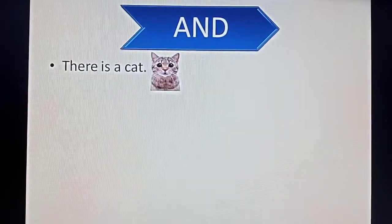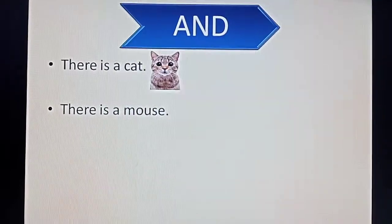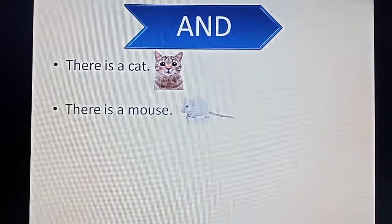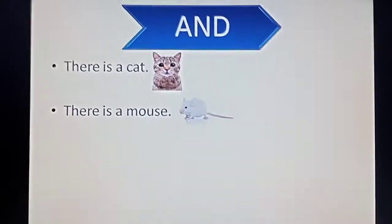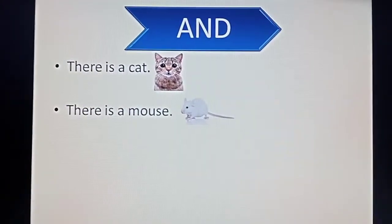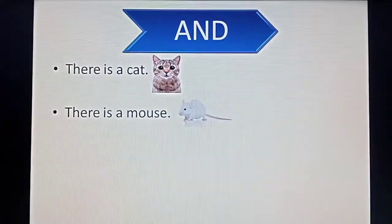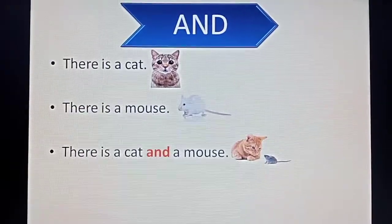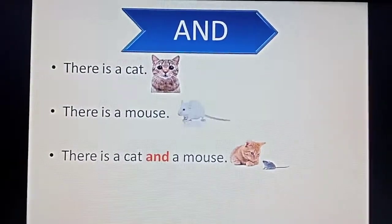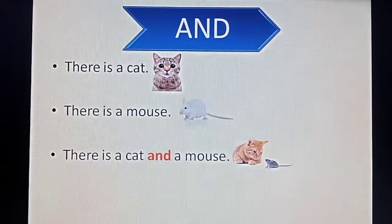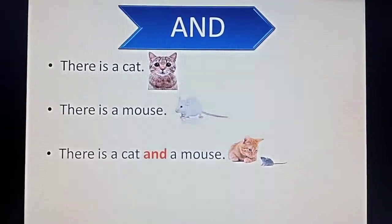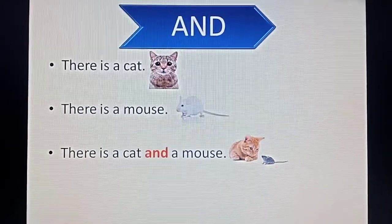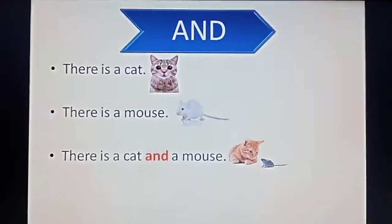There is a cat. There is a mouse. These are two sentences. If we want to join these two sentences, we will add 'and' like this: There is a cat and a mouse. Here, we remove 'there is' in the second sentence and join it with 'and' to the first sentence. There is a cat and a mouse.